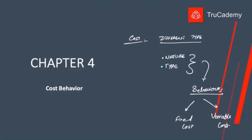On the other hand, variable cost — as the name suggests — varies in total. When the level of activity increases, variable cost also increases in direct proportion. When the level of activity decreases, variable cost also decreases. So there are other types of cost behaviors as well, as far as your MA2 course is concerned.